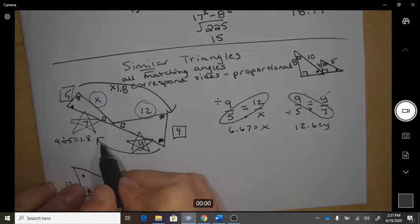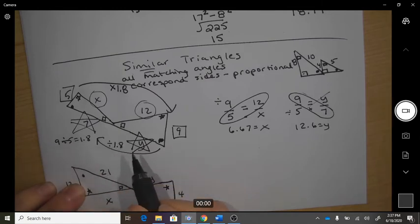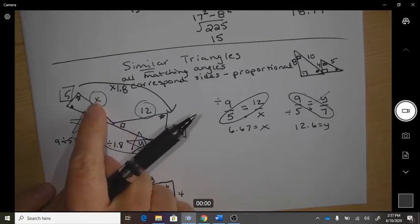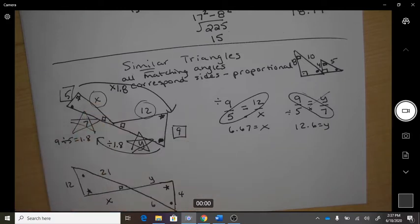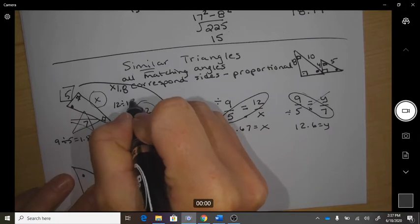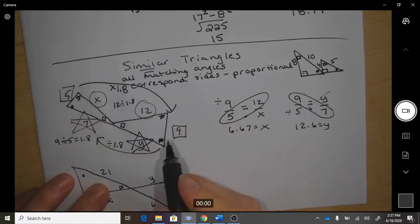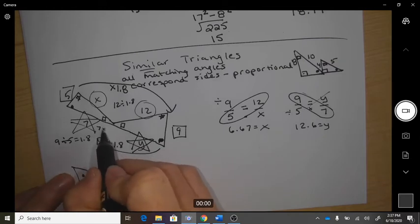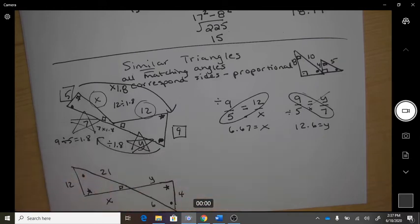And if you're going this way, you would divide by 1.8. So 12 divided by 1.8 gets you 6.67, and 7 going this way, 7 times 1.8 gets you 12.6. So two ways you could do it.